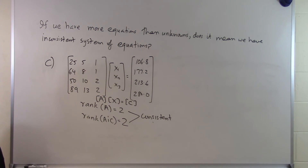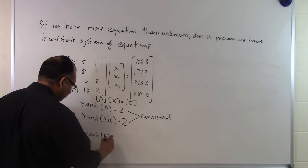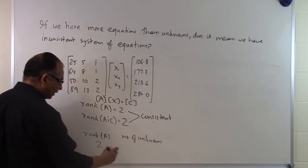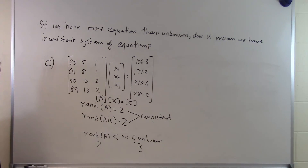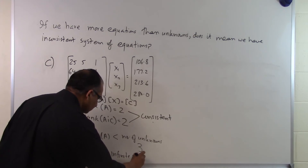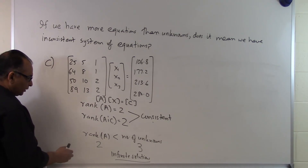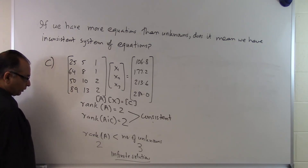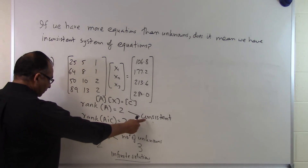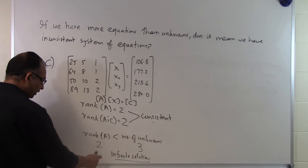That means we have either a unique solution or infinite solutions. Comparing rank of A with the number of unknowns: rank of A is 2, but the number of unknowns is 3. Since rank of A is less than the number of unknowns, this consistent system will have an infinite number of solutions. So going a step further: if the system is consistent, comparing the rank of the coefficient matrix to the number of unknowns tells us whether the solution is unique or infinite. Here the rank is less than the number of unknowns, giving infinite solutions.